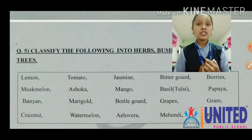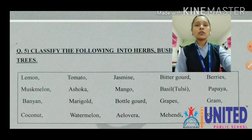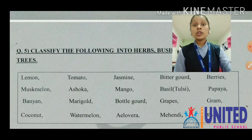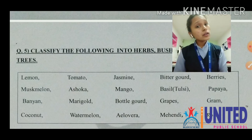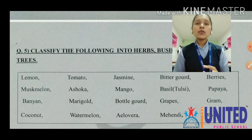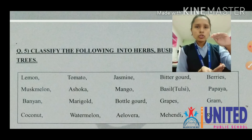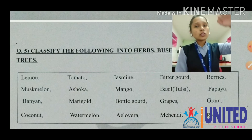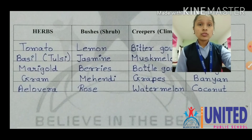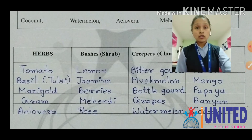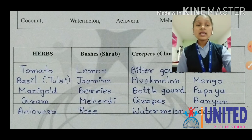Gram means chana — gram is a herb, it is a small plant. Coconut is a tree — a big tree. Watermelon is a creeper. Aloe vera is a herb. Mehendi is a bush or shrub — it is not too small, it is a bit bigger. Rose is a shrub or bush, at least 6 to 10 meters big. These are the classifications.